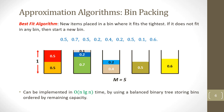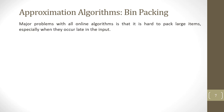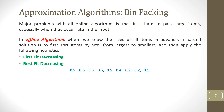Best Fit can be implemented in O(n log n) time by using a balanced binary tree storing bins ordered by remaining capacity. Until now we have seen online algorithms where we are not aware of the next item size. The major problem with all online algorithms is that it is hard to pack large items, especially when they occur late in the input. In offline algorithms, where we know the sizes of all items in advance, a natural solution is to first sort items by size from largest to smallest.